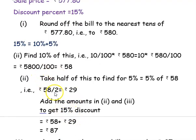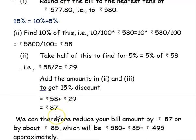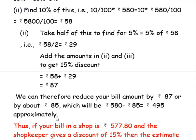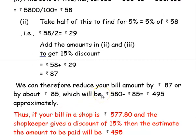For the total 15 percent, you add the amount for 10 percent and the amount for 5 percent: rupees 58 plus rupees 29 gives rupees 87. Since this is a discount, you reduce it from the sale price. Because we are estimating, we can round the discount off to rupees 85.